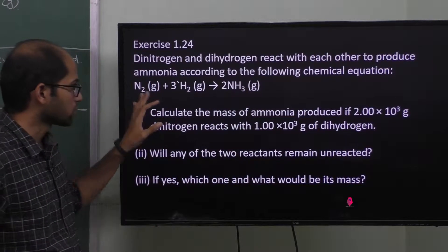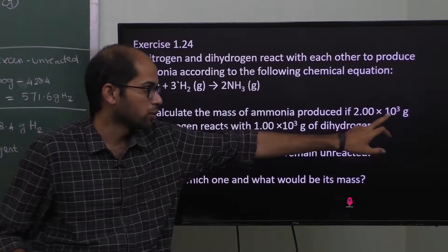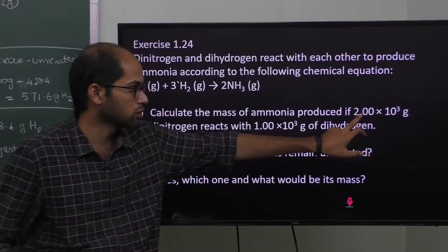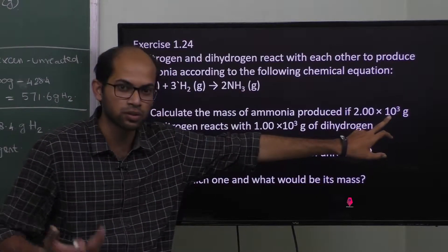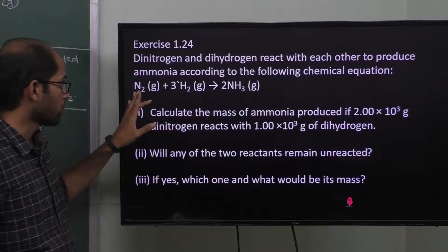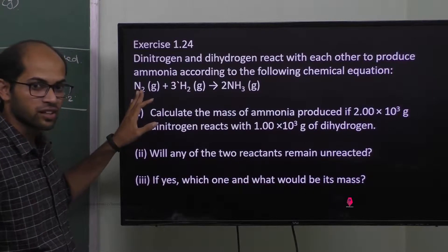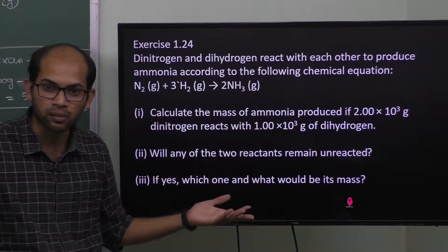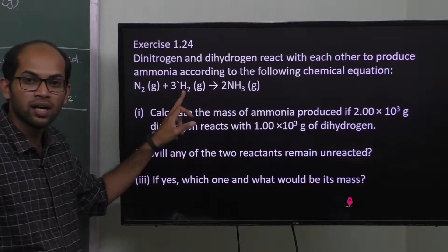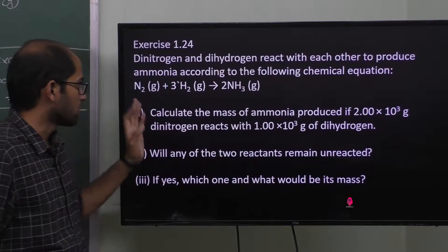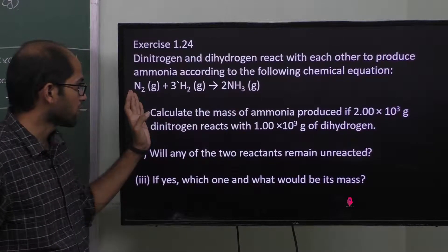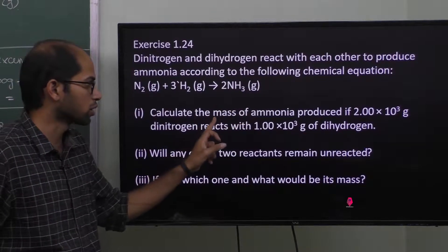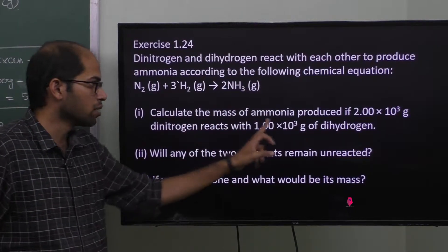So, dinitrogen is 2.0 × 10³ grams, which is 2000 grams. Dihydrogen is 1.0 × 10³ grams, which is 1000 grams. We have 2000 grams of nitrogen and 1000 grams of hydrogen. We need to evaluate how much ammonia is produced.